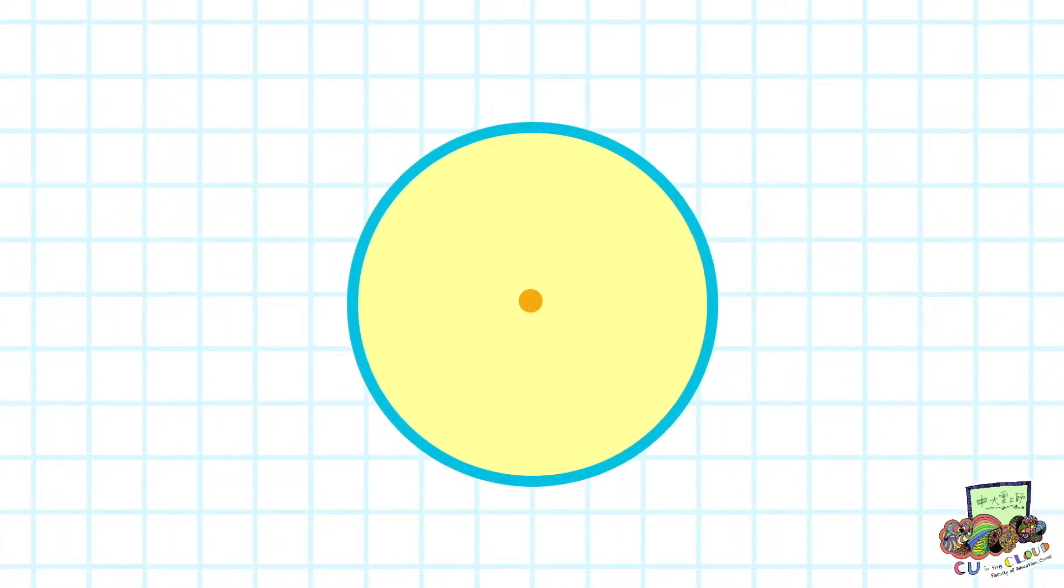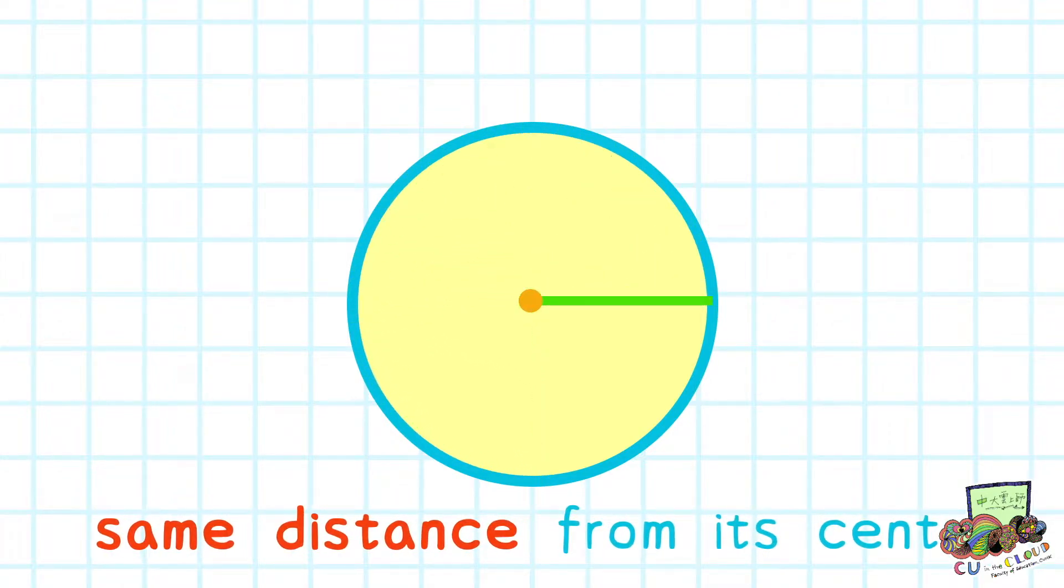The center point of a circle is called center. All the points of the circumference of a circle must have the same distance from its center.